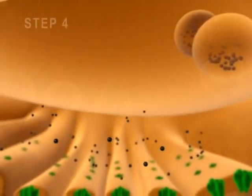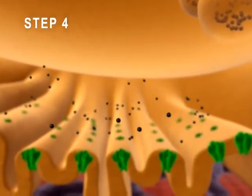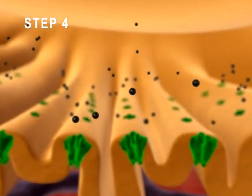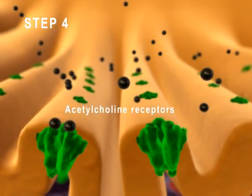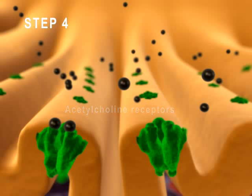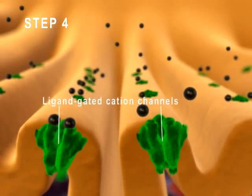Step 4. Acetylcholine diffuses across the synaptic cleft and binds to acetylcholine receptors which contain ligand-gated cation channels.